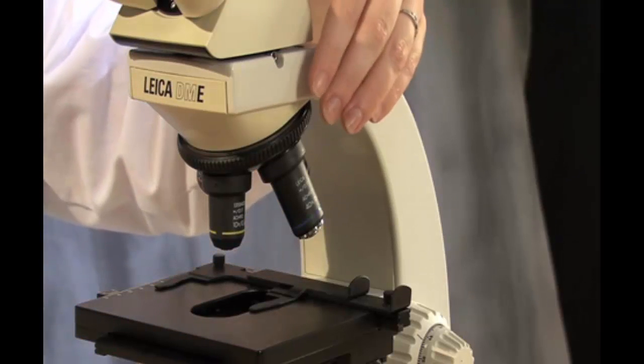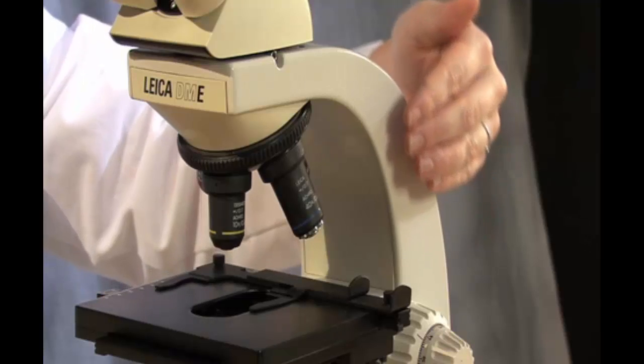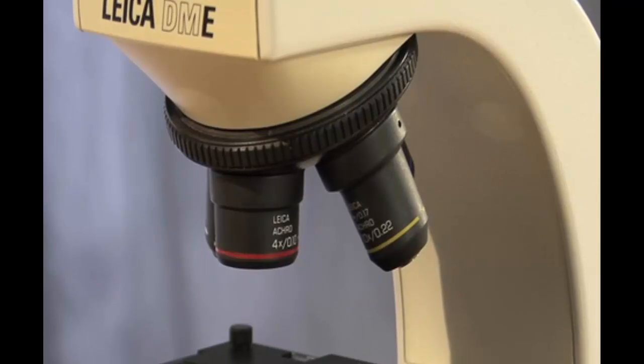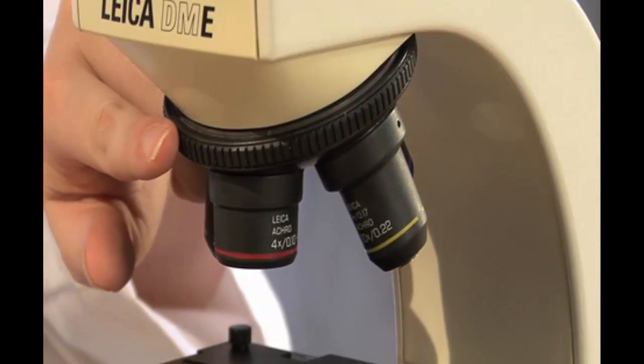Moving further down the microscope, we see the arm and attached to it is the entire magnification system for the scope. The system includes the revolving nose piece, which contains the four objective lenses.